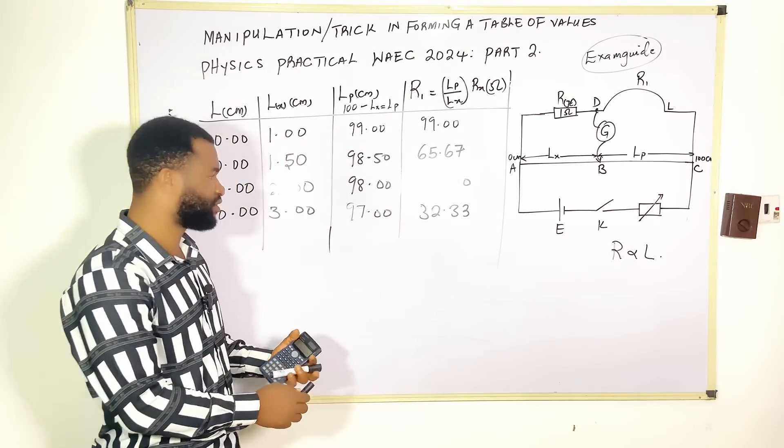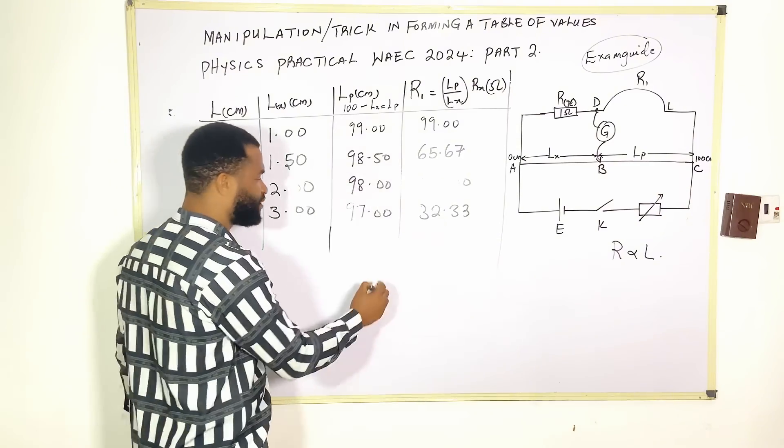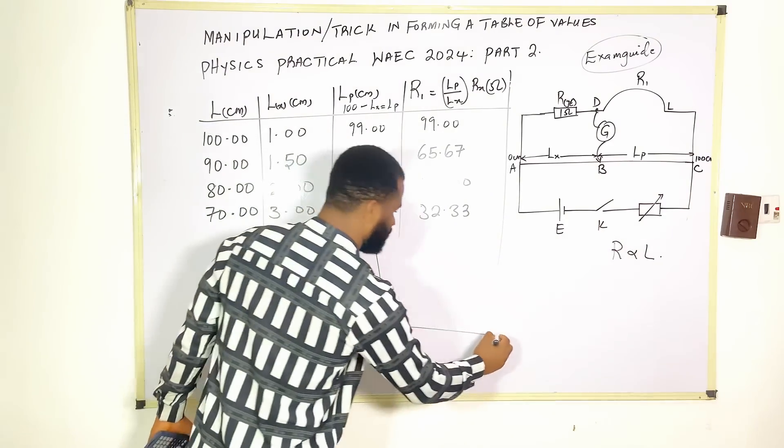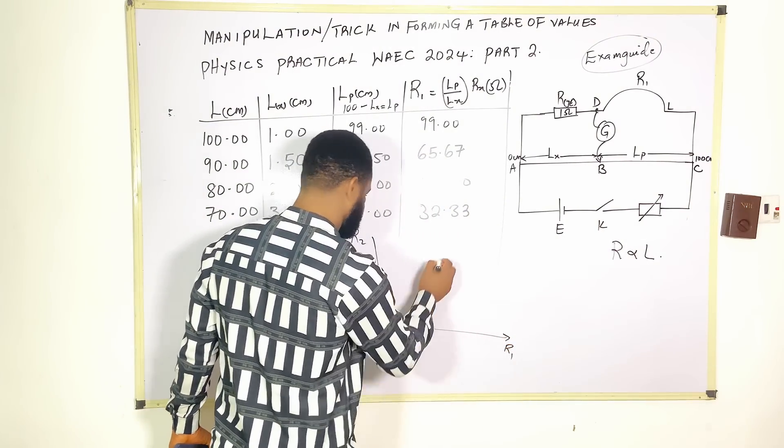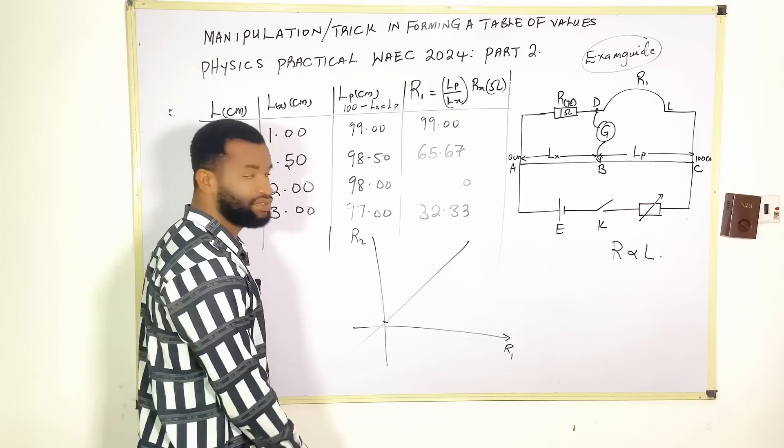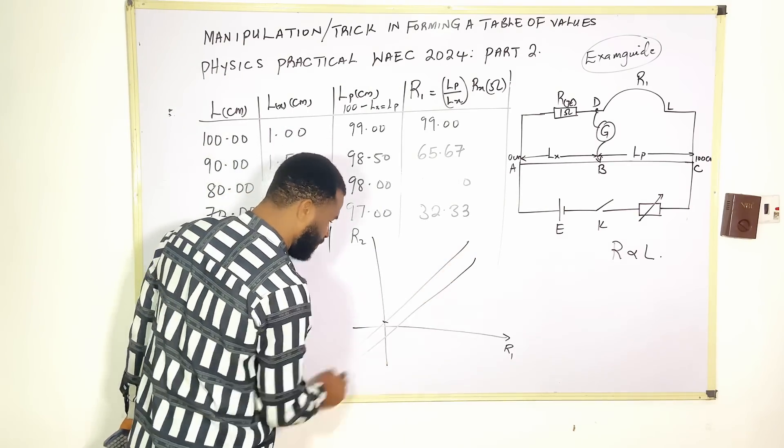Your graph must surely be a straight-line graph because this is R2 plotted against R1. You have a straight-line graph. Maybe you can cut this way at this point, or sometimes if it is a perfect one, you may cut through the origin.